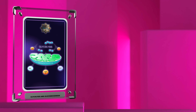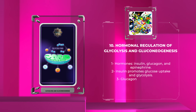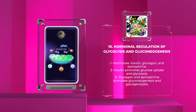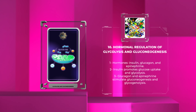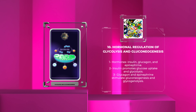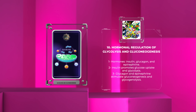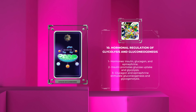Hormones such as insulin, glucagon, and epinephrine play crucial roles in regulating both glycolysis and gluconeogenesis. Insulin promotes glucose uptake and glycolysis, while glucagon and epinephrine stimulate gluconeogenesis and glycogenolysis. The intricate interplay between these hormonal signals ensures glucose homeostasis under varying physiological conditions.